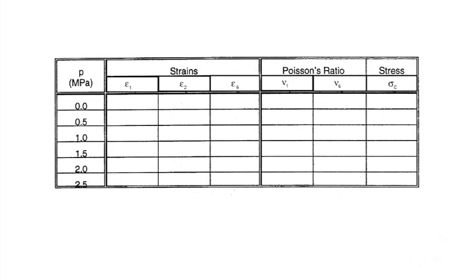The strains on gauges numbered 1, 2, and 6 will be recorded at six levels of internal pressure: 0, 0.5, 1.0, 1.5, 2.0, and 2.5 megapascals.